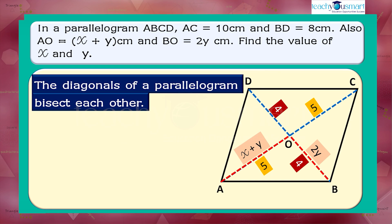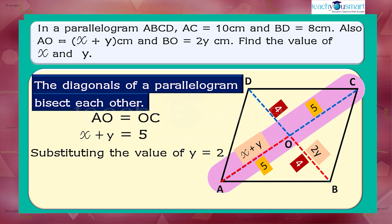Then the next condition is AO equals OC. That is, x plus y equals 5. Substituting the value of y equals 2 in the equation, we get x plus 2 equals 5.